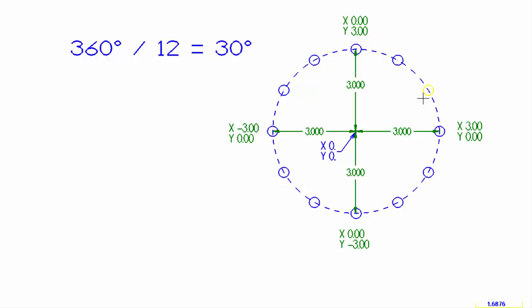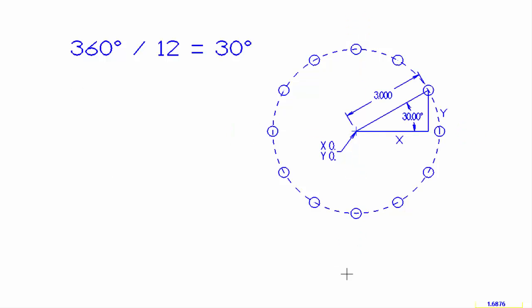We're going to start by calculating the x and y coordinates of this first hole at 30 degrees. I'm going to show you the triangle that we're going to be using to calculate the x and the y distance from this x0 y0 origin. We know that the angle is 30 degrees and the hypotenuse of this triangle, which is the radius value of this circle, is 3 inches.